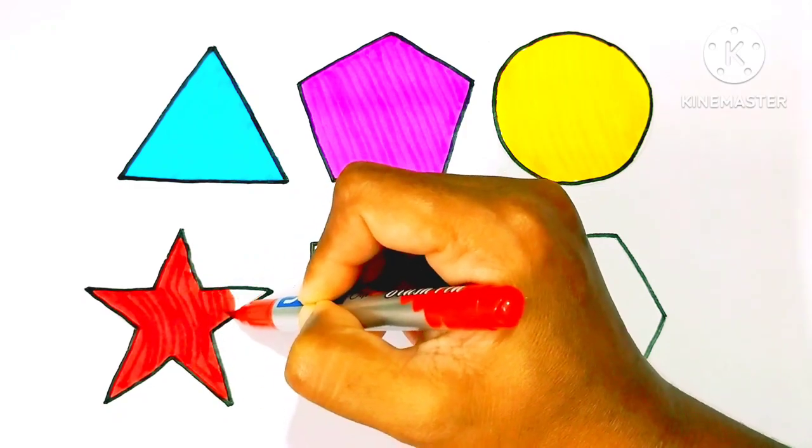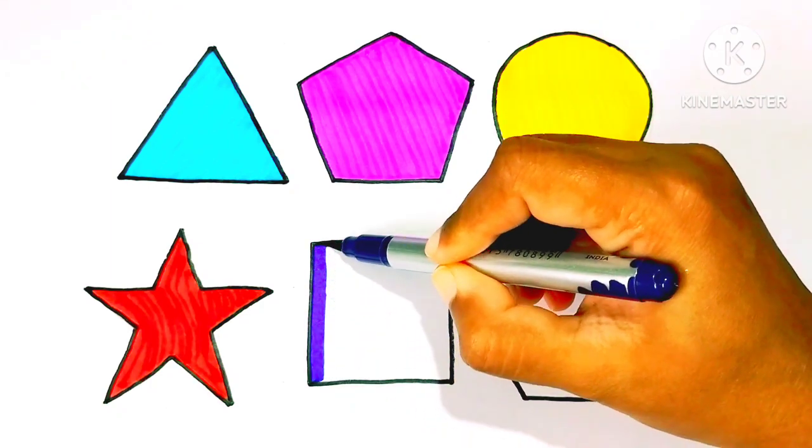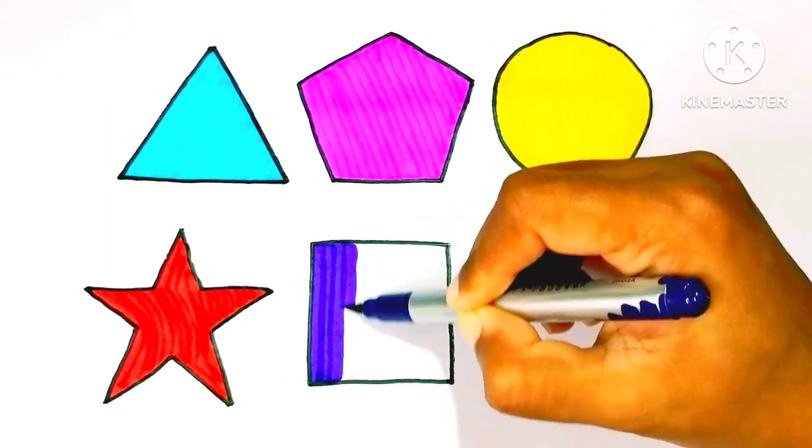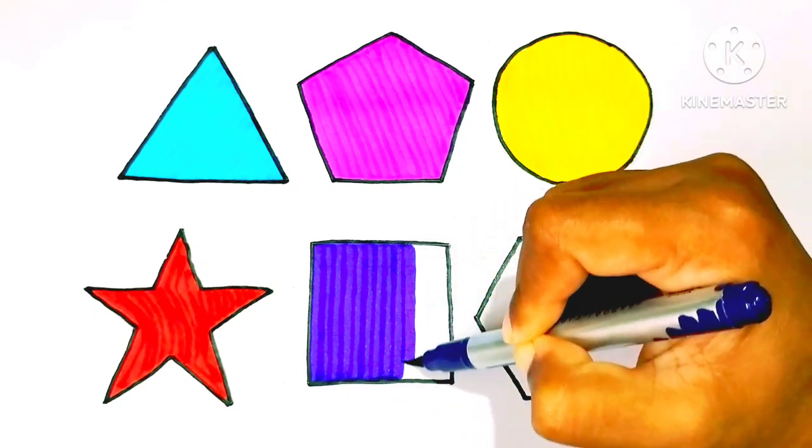W, X, Y, and Z. Now I know my ABCs. Purple color, purple color square.